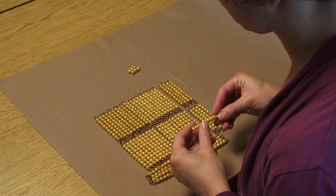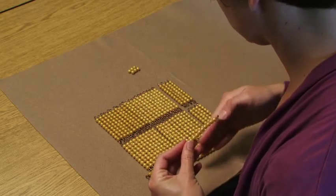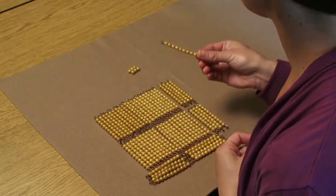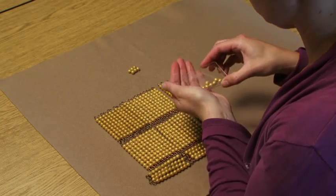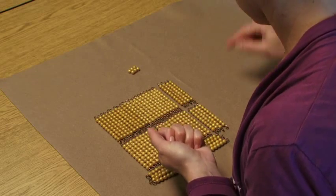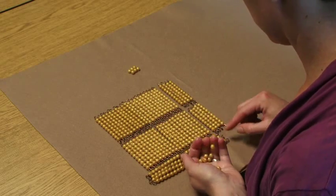Now I have one left. I know that I can't use that because I won't be able to distribute it to each one. So I'm going to exchange my 10 bar for 10 unit beads and I will start building my final square.